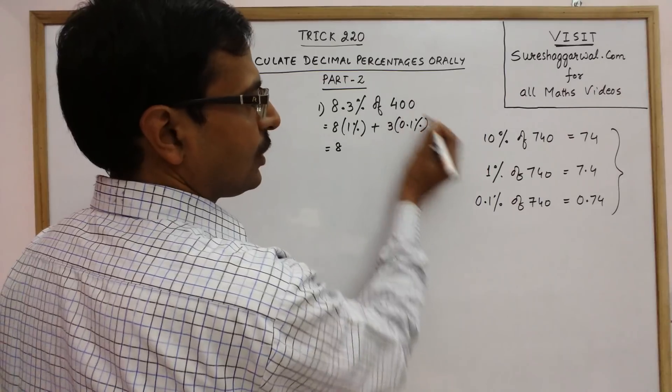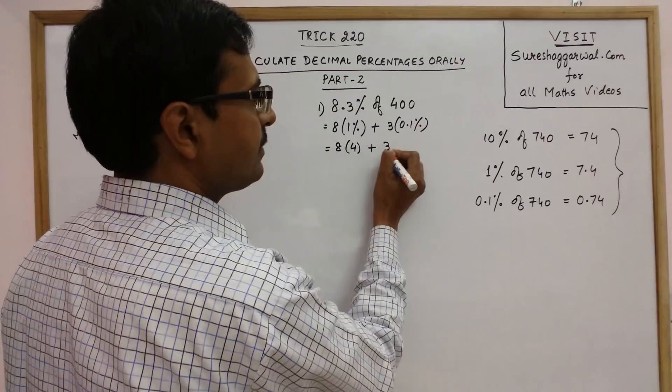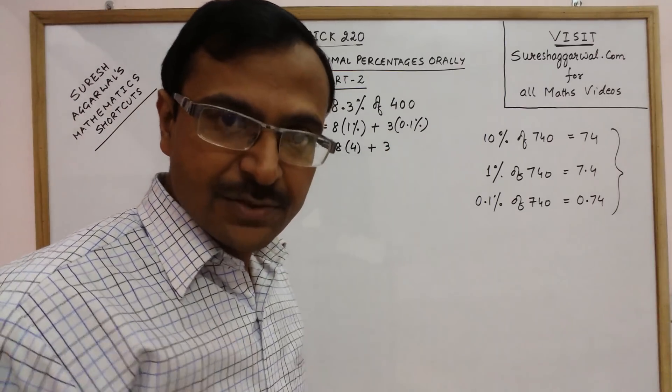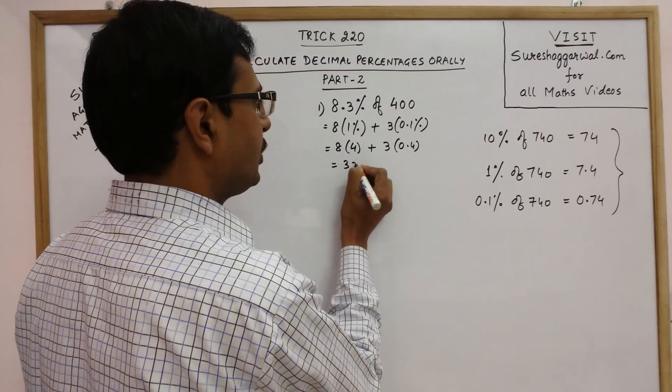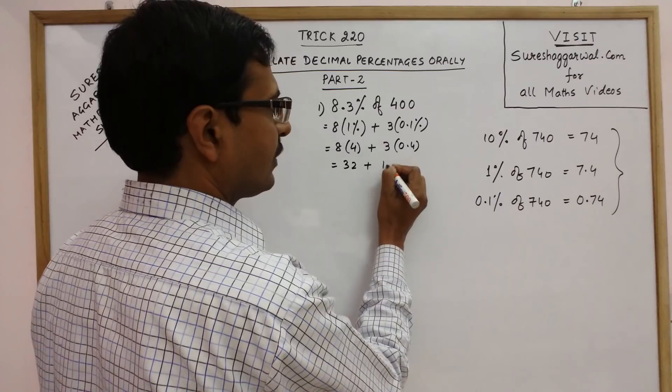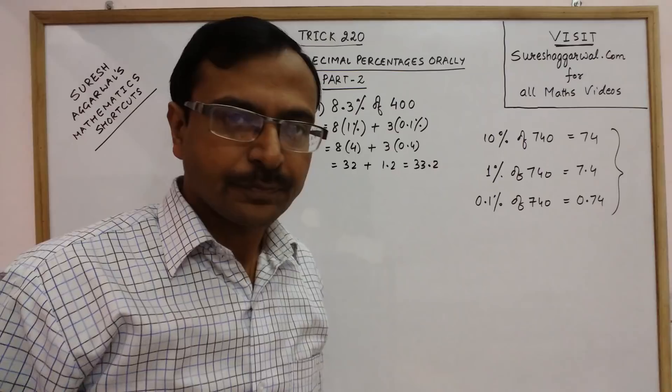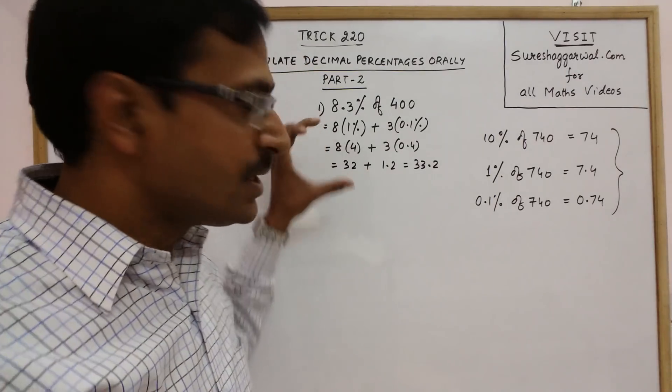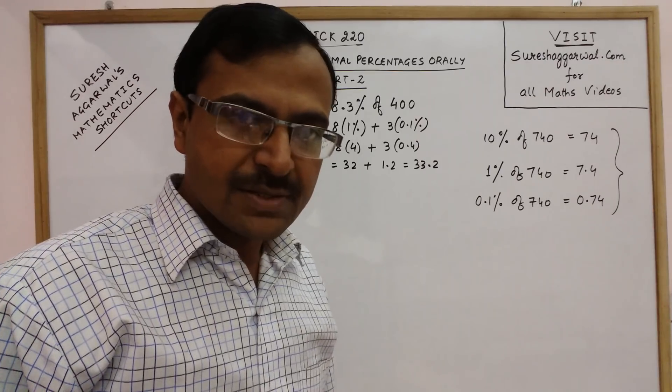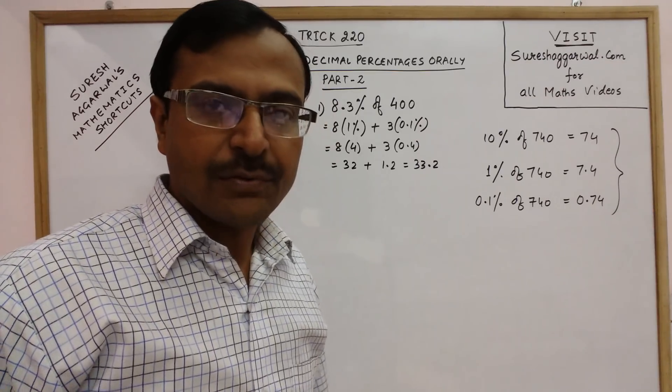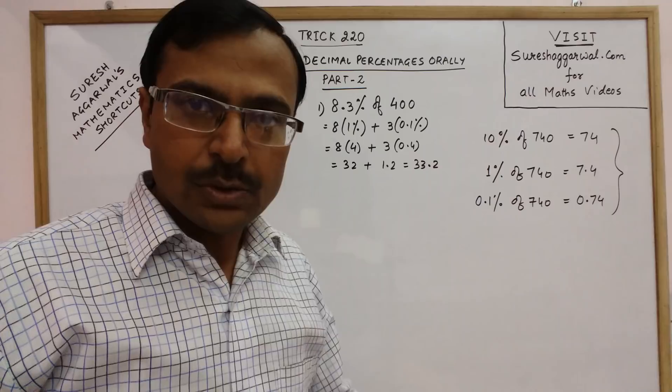Now once you know the concept of 1% and 0.1% you can very well put the values here and solve the answer. Now see 8 into 1%, 1% is 2 digits from the right so 4, and 3 times 0.1% that is 3 digits from the right so 0.4. So your answer will be 32 and 3 into 0.4 is 1.2. So 33.2 is your final answer. Now let me remind you that I have written all these steps just for understanding purpose. Once you practice this concept for 20-30 minutes taking a different set of examples you can get rid of all these steps and calculate this value orally also.